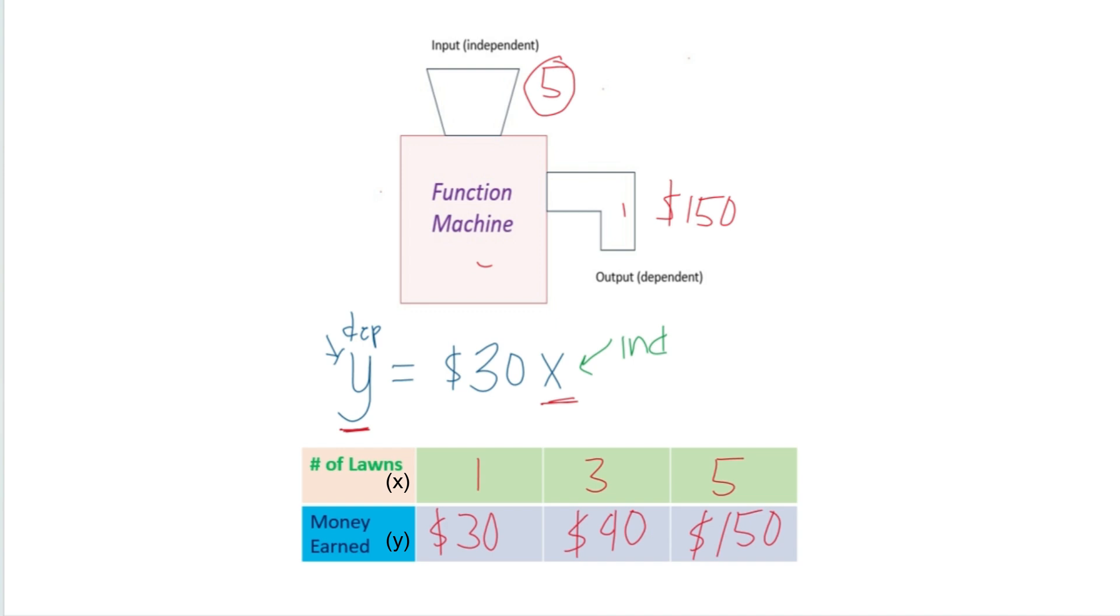One, you control by putting any number in. The other is dependent on that as it goes through some type of function, and it gives you a result based on what you put in, which makes it the dependent variable.